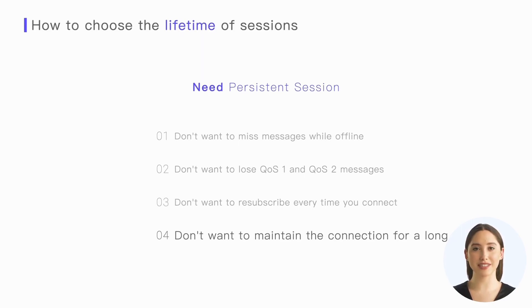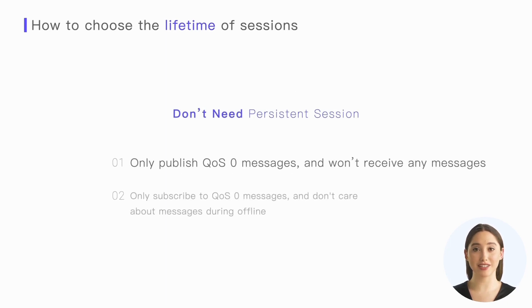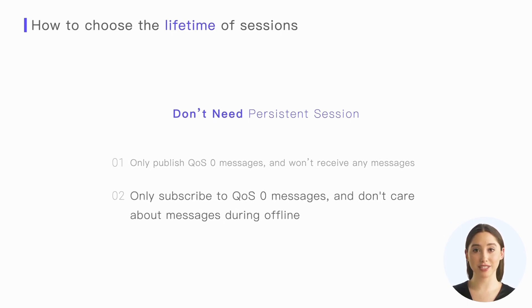The scenario that does not require persistent sessions: if our client only publishes QoS0 messages without receiving any messages, we don't need persistent sessions. And if our client only subscribes to QoS0 messages and doesn't care about messages during offline periods, we can also do without persistent sessions. That's all for this lesson. In the next lesson, we will learn about the protocol flows of the three QoS levels in MQTT and the principles behind their different message quality. Thank you.